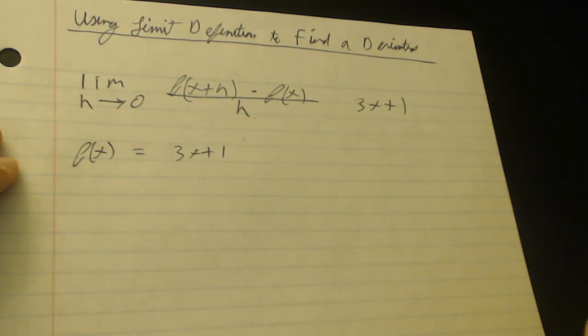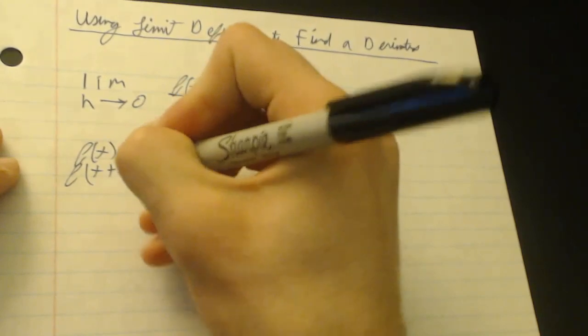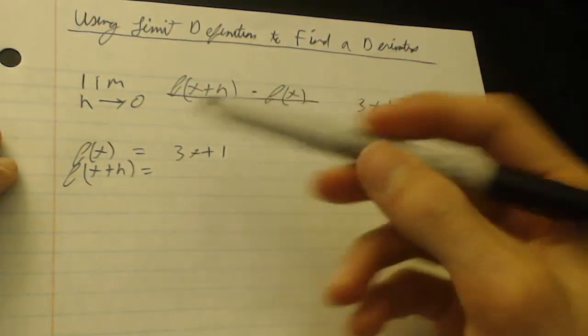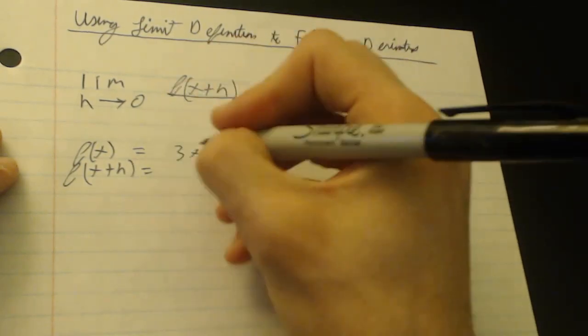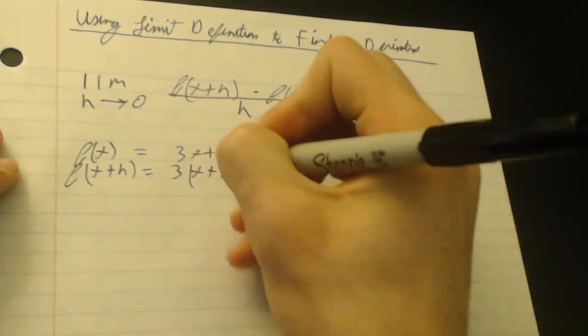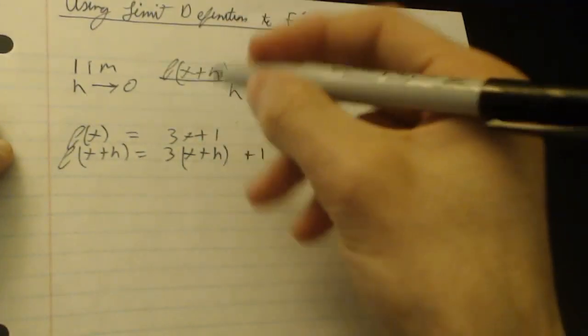So first we already know that f of x is equal to 3x plus 1. So what we have to do is also we need f of x plus h, which all you do is wherever the x is, you just put x plus h in there, in that place. So it would be 3 times x plus h plus 1.